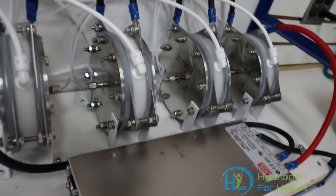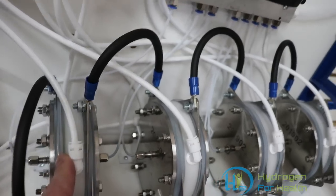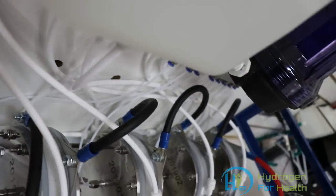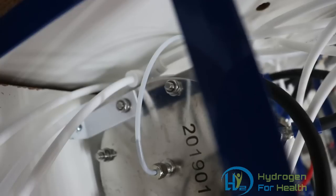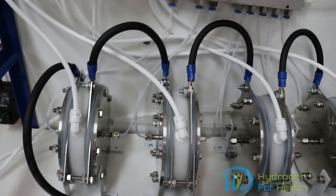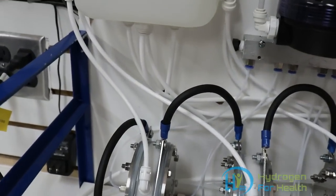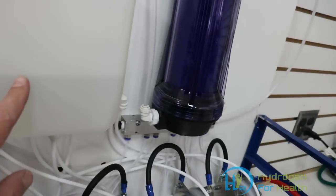So on these cells there is a water output and on the back a water input. A little hard to see, but there's a water input on the back. So on the water output, water goes out, comes into our water reservoir.